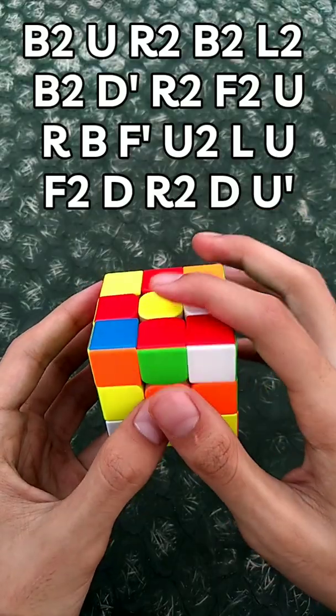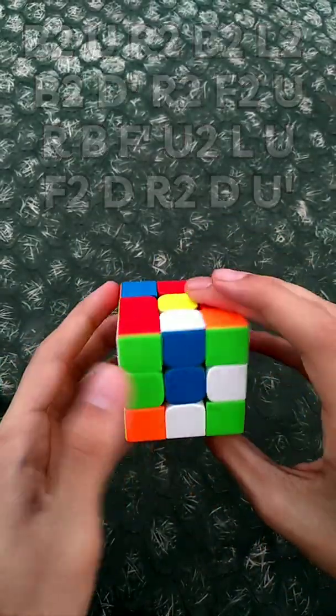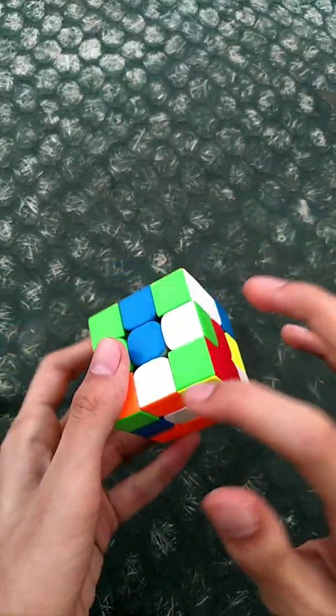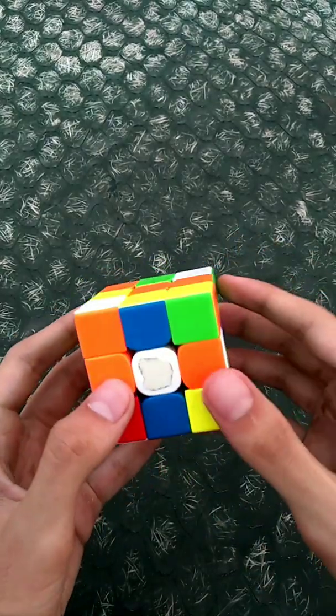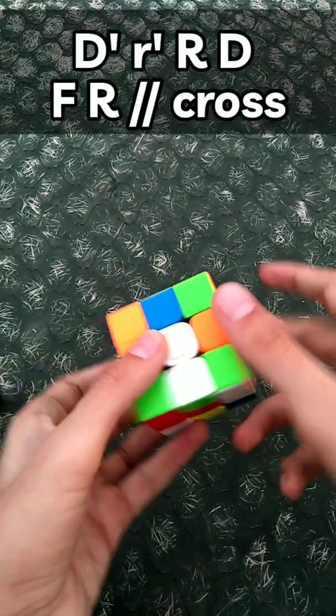He did the cross in yellow but I'll show you in white. The cross pieces are here, here, here, and here. He started with the cross color facing him and did a D prime to solve this green cross piece.